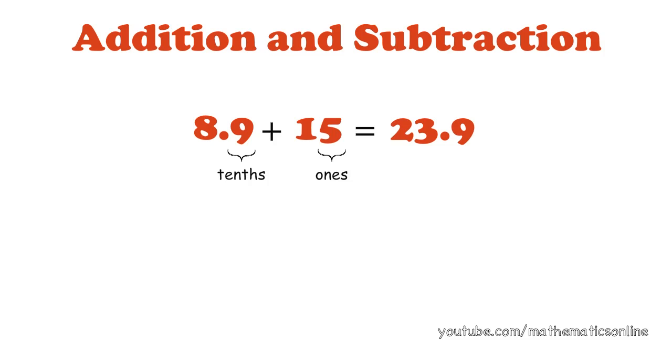The computer says that the answer is 23.9. This time the answer should have the same place value as the larger place value between the tens and the ones, which is the ones. Therefore we round up and the answer is 24.